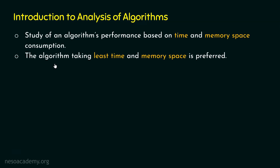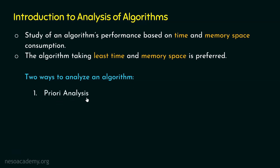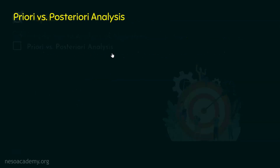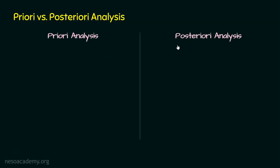Analysis of algorithms allows us to check the performance of an algorithm based on time and memory space consumption. There are two ways in which we can analyze an algorithm: the first is priori analysis and the second is posteriori analysis. Let's understand the difference between these two types.